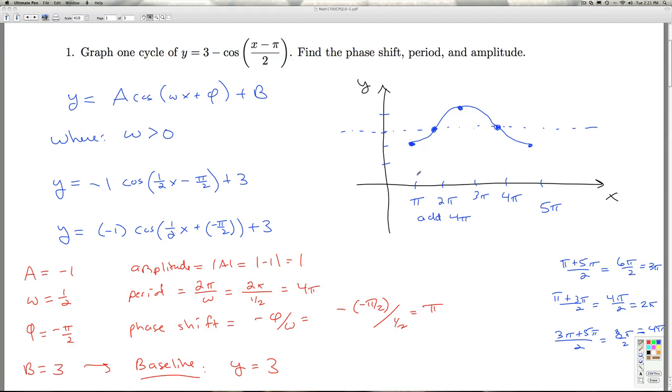And if you trace through here and look at the points, we get the same points we got before. Pi comma 2, 2 pi comma 3, 3 pi comma 4, 4 pi comma 3, and 5 pi comma 2. Alright, so that's the second way to do it. In either case, that'll do it for number 1.